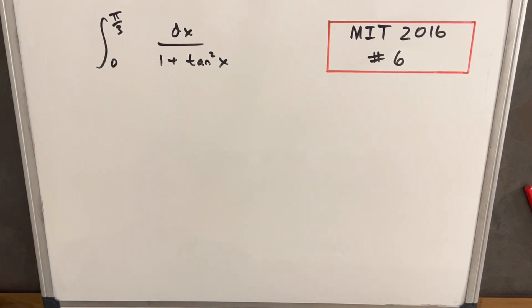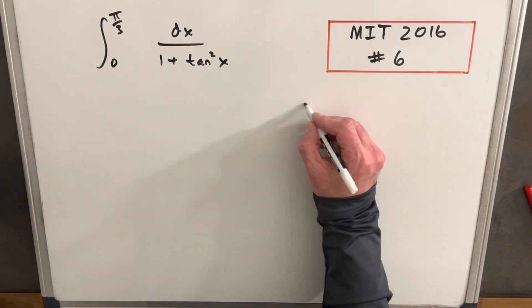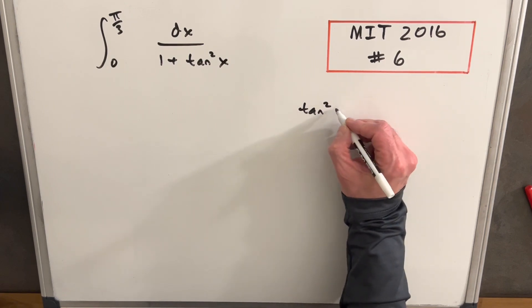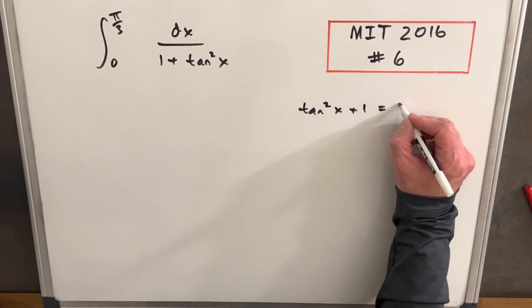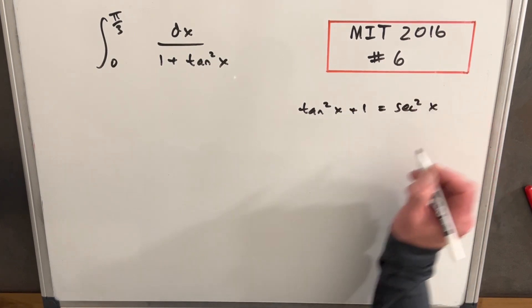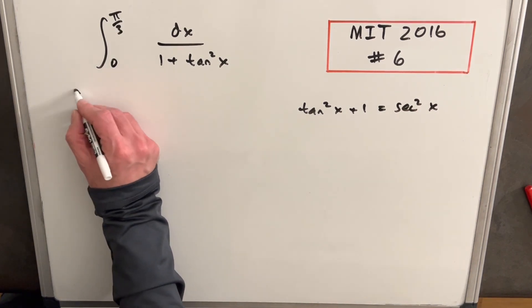Okay, I think I know exactly where I want to begin. We have this trig identity, tan squared x plus one equals secant squared x. And I think that's going to simplify this pretty nicely.